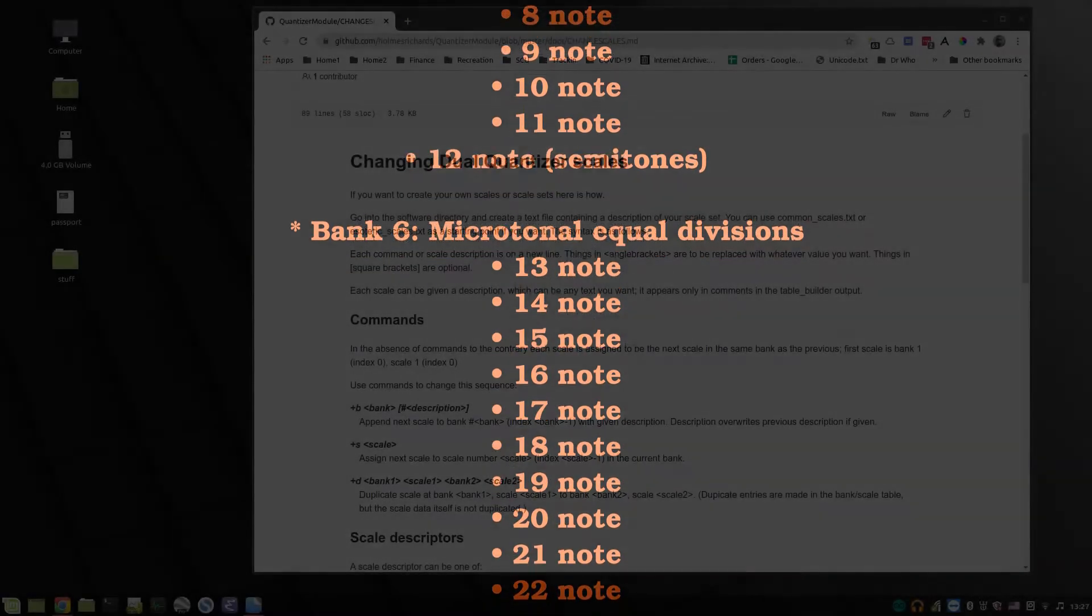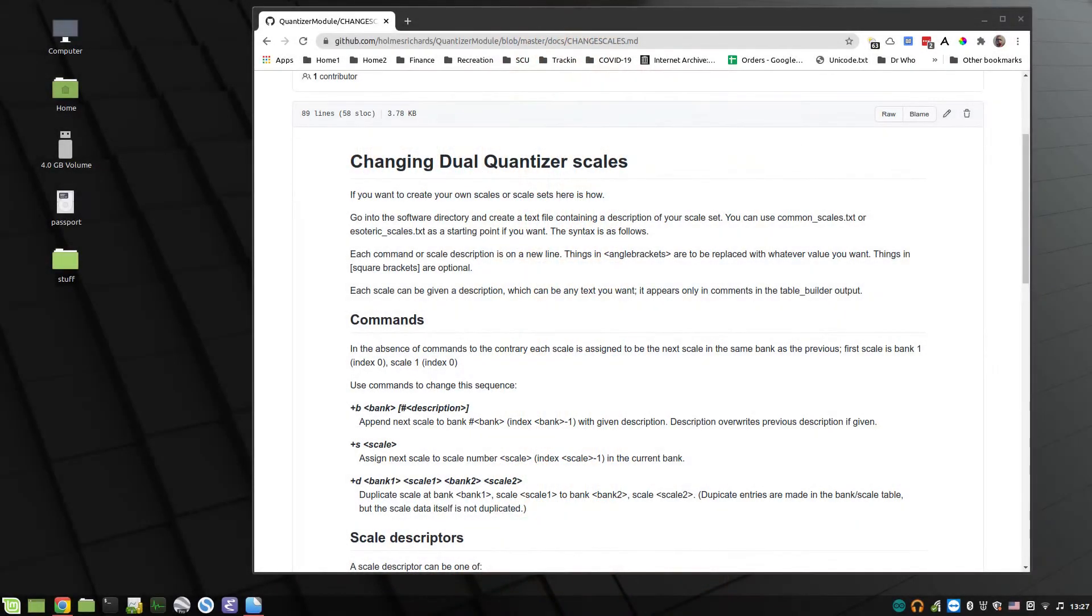And if that's not good enough for you, well, you can always change the software yourself. It's relatively easy, it's set up to be relatively easy to put your own scales into the software. You can pull them out of the Scala database, or you can define them in various ways based on periods and generators, or equal divisions of the octaves, or equal divisions of something other than octaves, things like that. All kinds of interesting experimental possibilities.